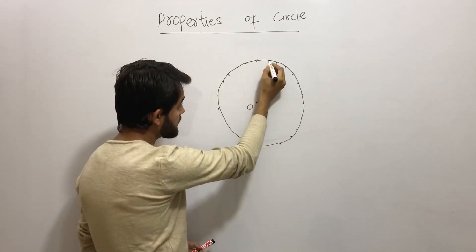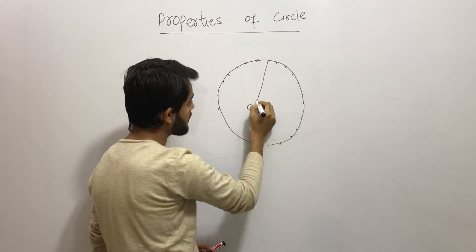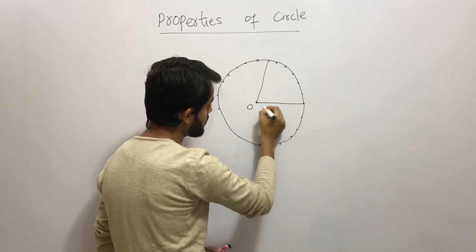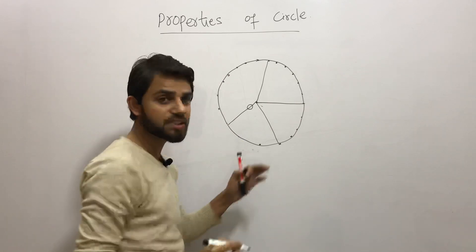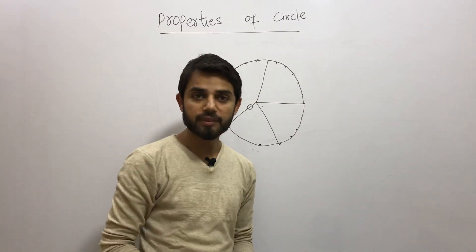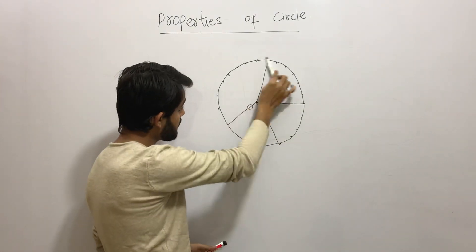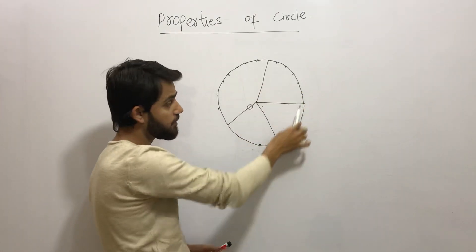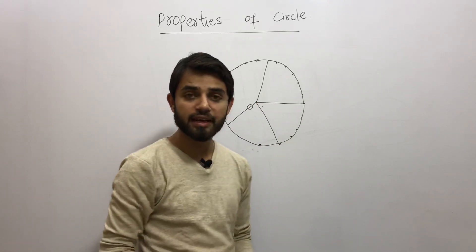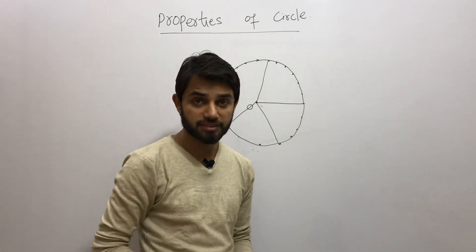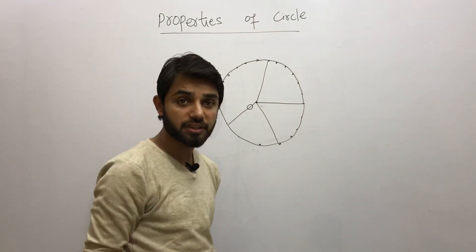All these distances from the fixed point O to the points on the circle are called the radius of a circle. The points we took form the circle, and they are lying on the boundary of a circle. The boundary of a circle is also defined as the perimeter of a circle.